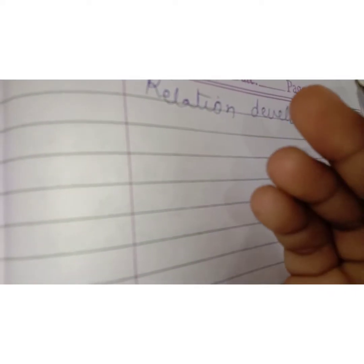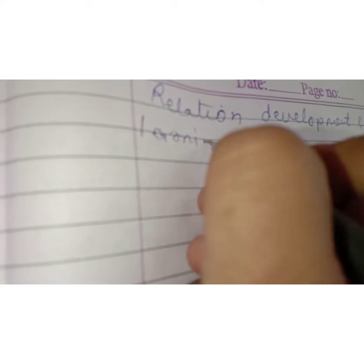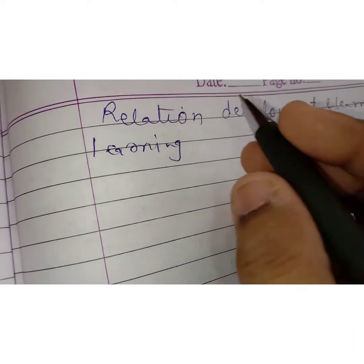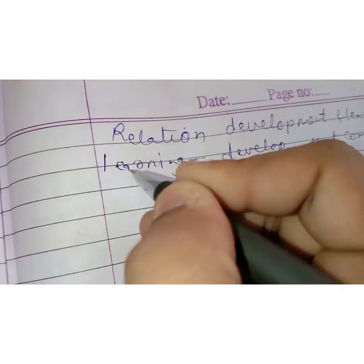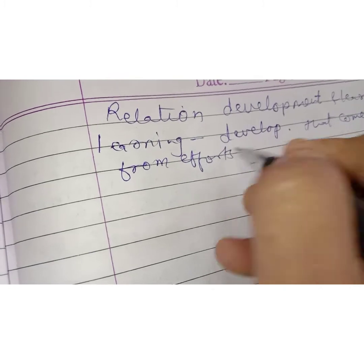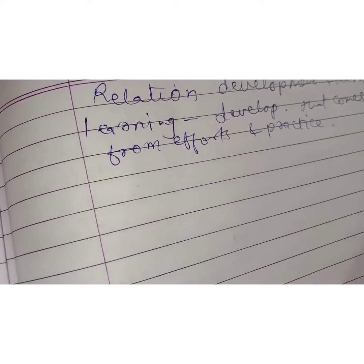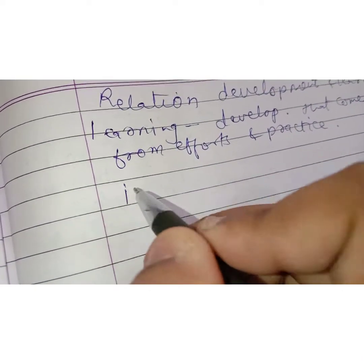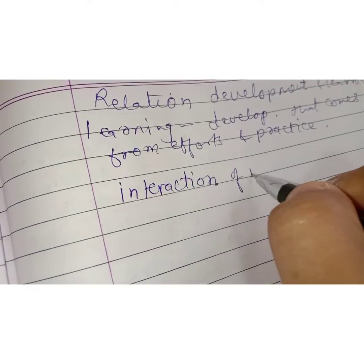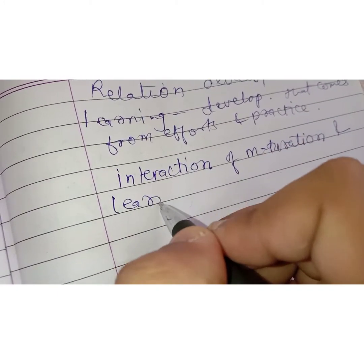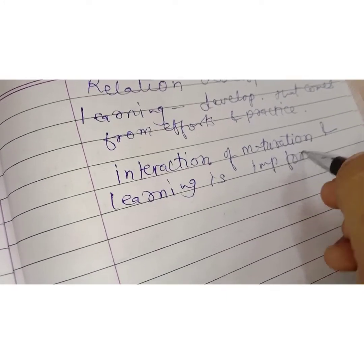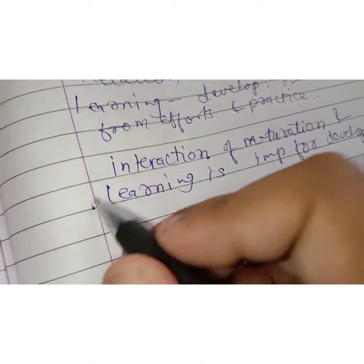The development of our efforts and practices is what we call learning. When we talk about learning, the development of our efforts and practices is why we call it learning. This is an interaction where maturation and learning are both important for development.